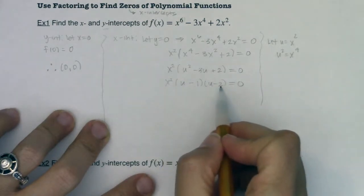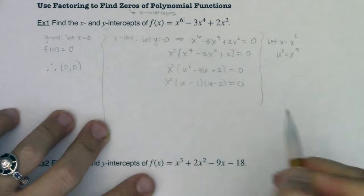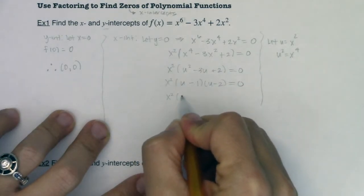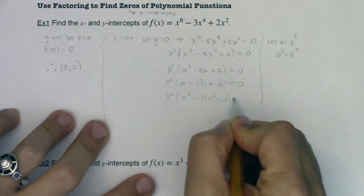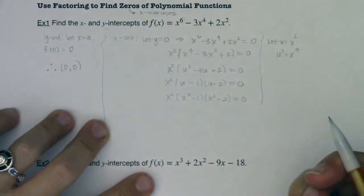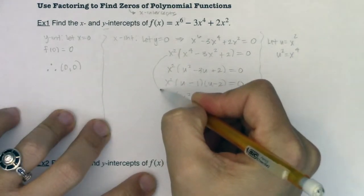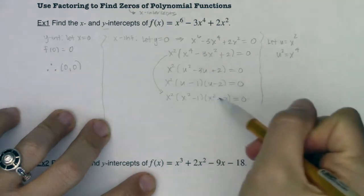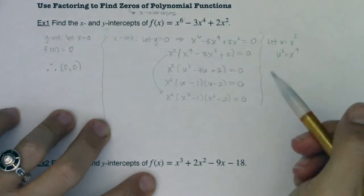So this would be x squared times u minus one and u minus two, right? The negative one and the negative two multiply it to positive two, but negative one plus negative two adds to negative three. And I could back sub this and say this was x squared minus one times x squared minus two being equal to zero. Or maybe you just saw it. You're more than welcome to just skip from this step to this step to see that, oh, I can break up this quartic if I make it x squared minus one and x squared minus two.